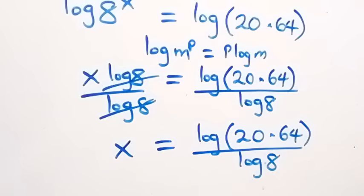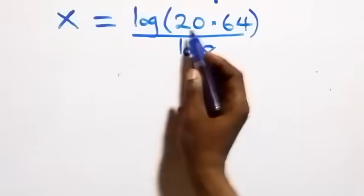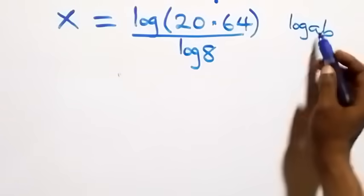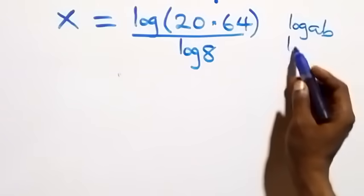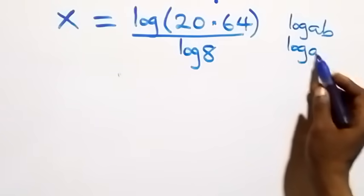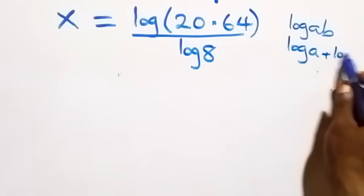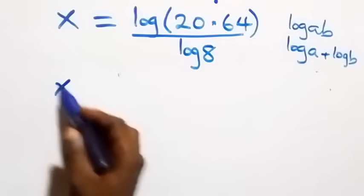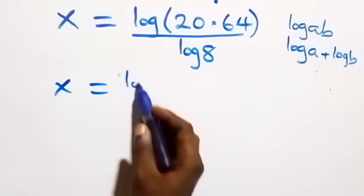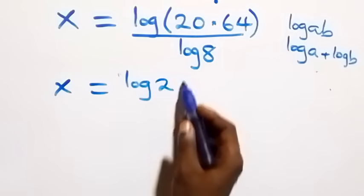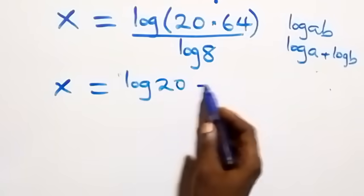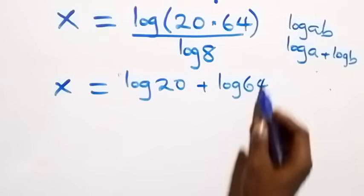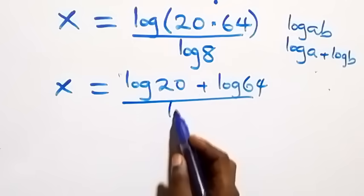From here, applying the log product rule — log(a × b) equals log a plus log b — we have x equals log 20 plus log 64, all over log 8.